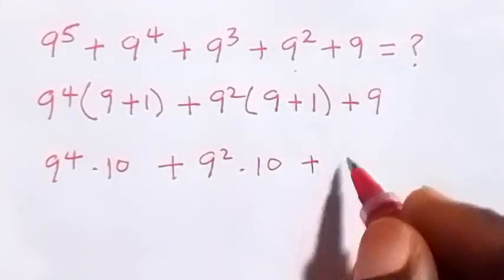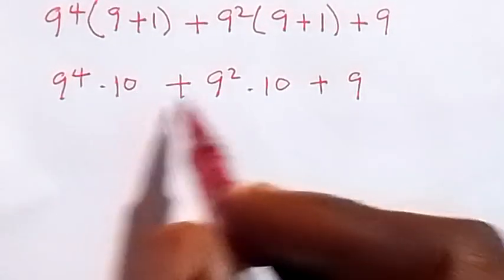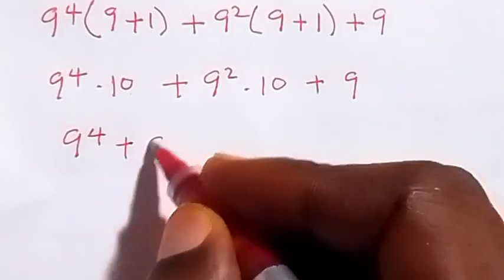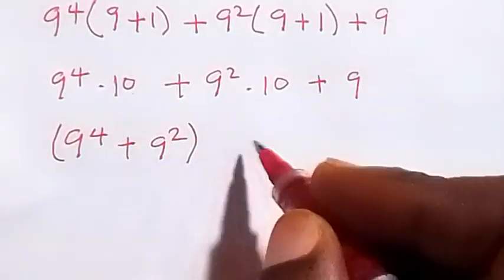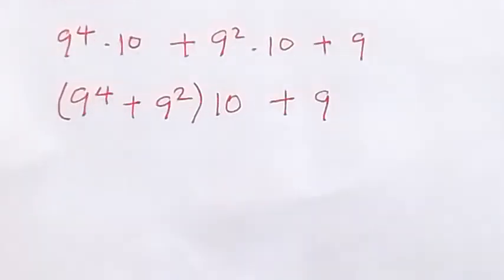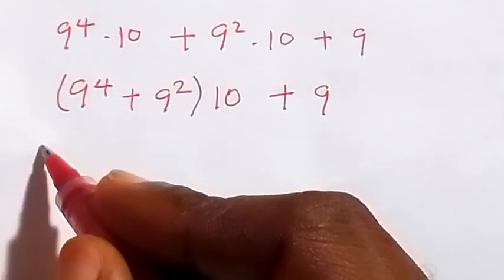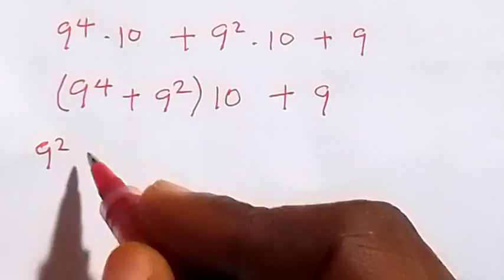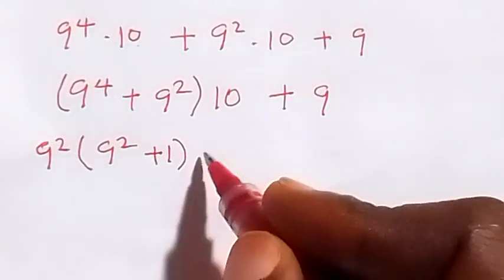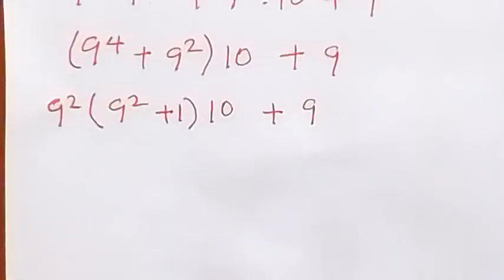Then plus 9. So from here let's take 10 out of the bracket, and we have 9 raised to power 4 plus 9 squared, then multiplied by 10, then plus 9. From these two terms we can also factor what is common. We have 9 squared, then what is left here is 9 squared plus 1, then multiplied by 10, plus 9.